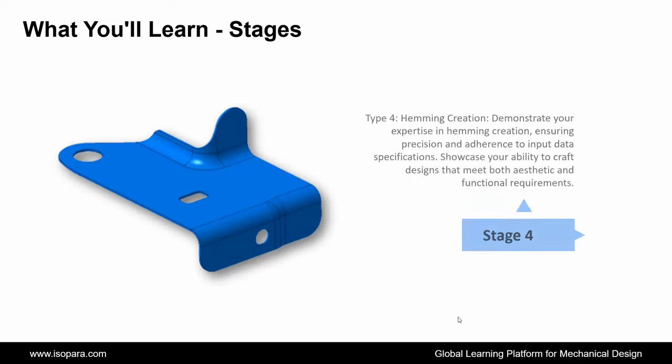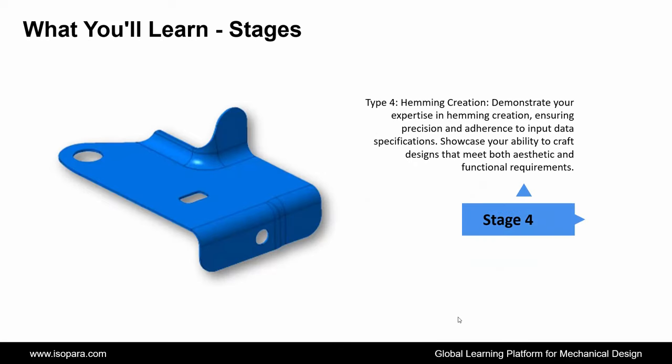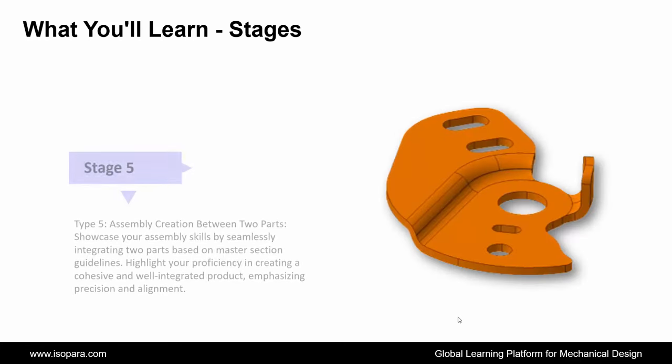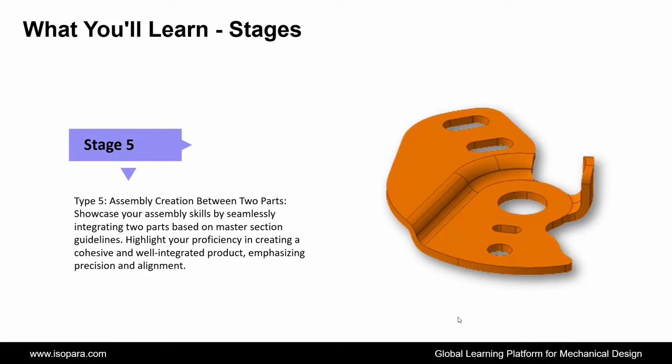Fourth is Hemming Creation — demonstrate your expertise in hemming creation, ensuring precision and adherence to input data specifications, crafting designs that meet both aesthetic and functional requirements. And the last is Assembly Creation Between Two Parts — showcase your assembly skills by seamlessly integrating two parts based on master section guidelines, highlighting proficiency in creating a cohesive and well-integrated product with precision and alignment.